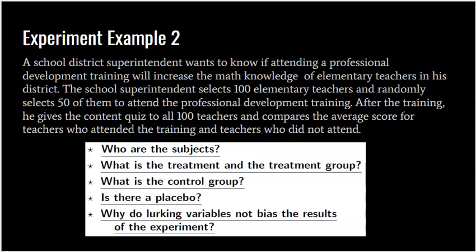This experiment had all four pillars: comparison — there were two groups; randomization — treatments were randomly assigned; replication — 50 people in each group; and control — don't even tell the control group they're in the experiment, just tell 50 to go to professional development. Other things we can control: how long they have to work on the test — everybody gets 60 minutes, everybody takes the same test. Things like that prevent them from becoming confounding or lurking variables.